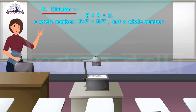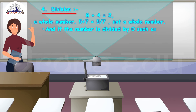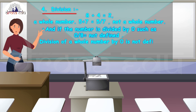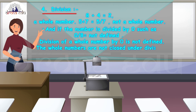So just like subtraction, for division we will not always get a whole number. Also, if we divide a number by 0 — for example, 0 divided by 8 — it is called not defined. From this I can see that whole numbers are not closed under division.